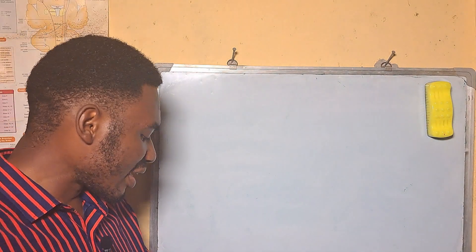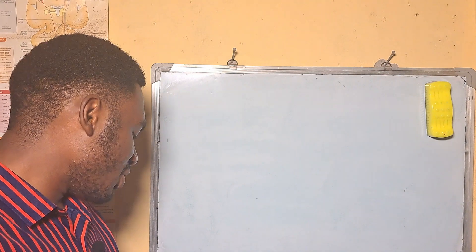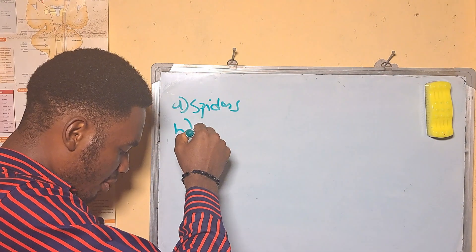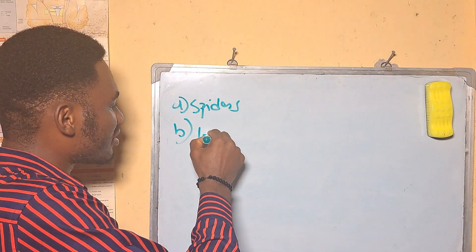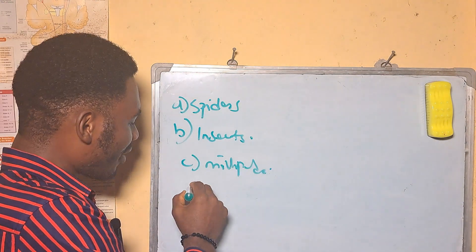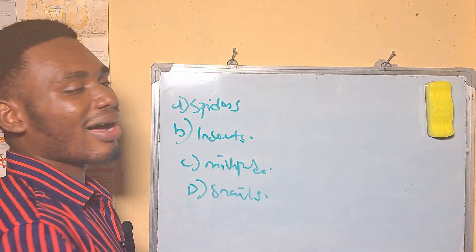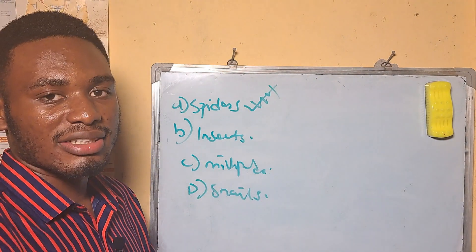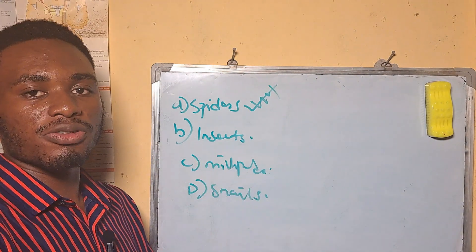Lung books are used for respiration in — A: spiders, B: insects, C: millipedes, D: snails. Our answer is A, spiders. Spiders use lung books for respiration.